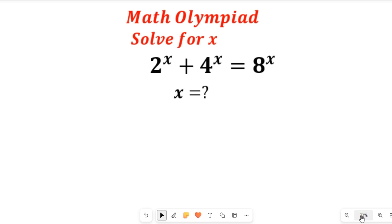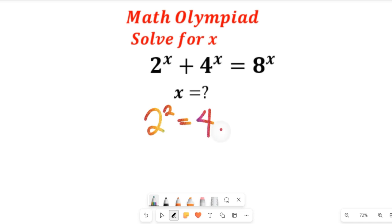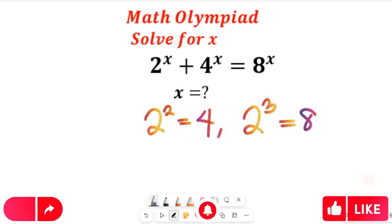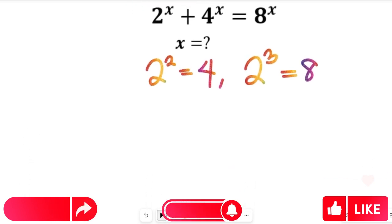To solve this question, I want us to remember this key point: from this question, 2 to the power of 2 is equal to 4, and we can also have 2 to the power of 3 equal to 8. So that means we can simply substitute those values — 2 for 4 and 8, respectively.